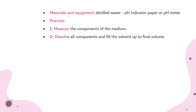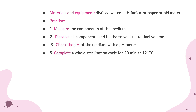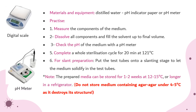To prepare media in the laboratory, you will need distilled water and a pH indicator paper or pH meter. First, measure the components of the medium and dissolve all components in the solvent up to the final volume. Check the pH of the medium with a pH meter, then complete the sterilization cycle for 20 minutes at 121 degrees centigrade.